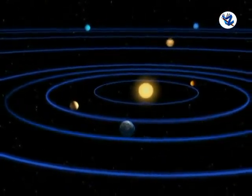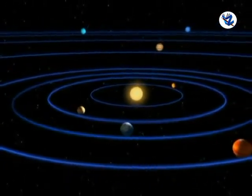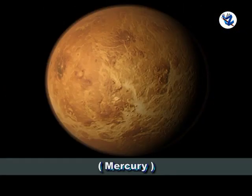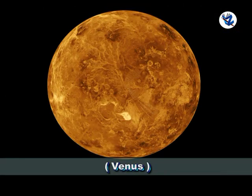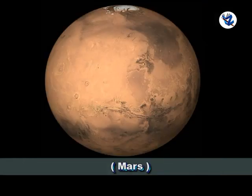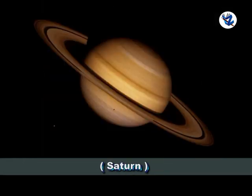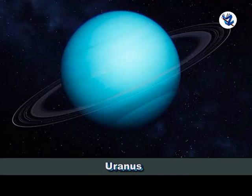The names of these planets are Mercury, Venus, Earth, Mars, Jupiter, Saturn, Uranus and Neptune.